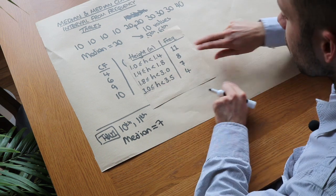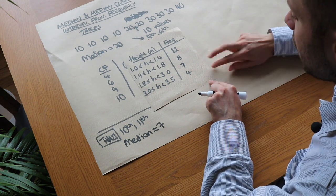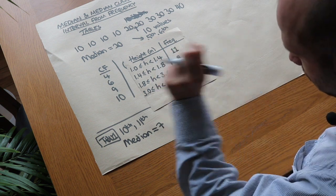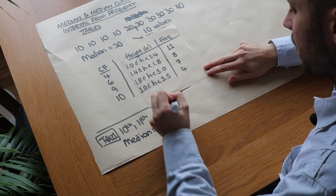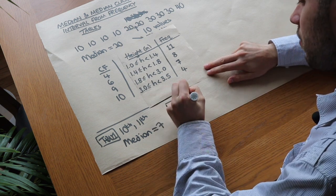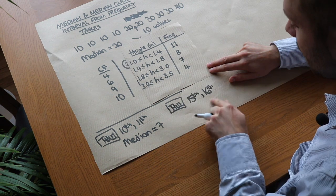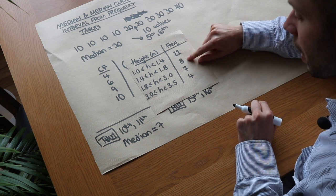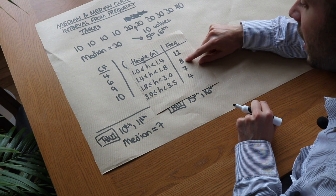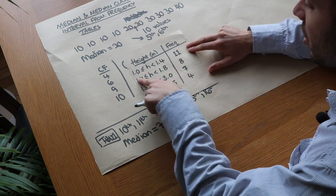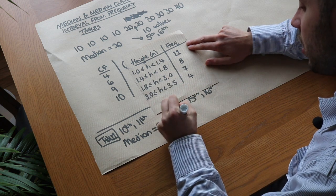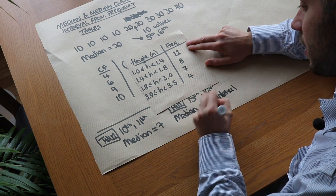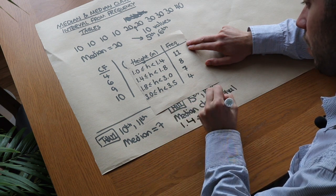For the second question, 11 + 8 + 7 + 4 = 30 items, so we halve that to get the fifteenth item as the middle position. We want halfway between the fifteenth and sixteenth. Do the fifteenth and sixteenth items occur within the first eleven items? No. But do they occur within the first nineteen? Eleven plus eight is nineteen — yes they do. So the median lies in this interval, and the median class interval is h between 1.4 and 1.8 metres.